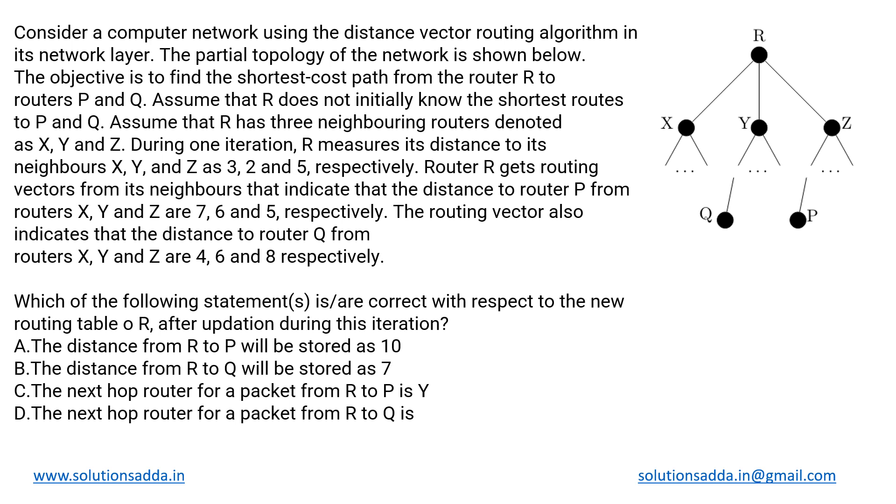This is a computer networks question based upon distance vector routing. We have been given the network structure which is using the DVR algorithm for routing. The partial topology of the network is as shown in this particular figure. The objective is to find the shortest cost path from router R to P and Q.